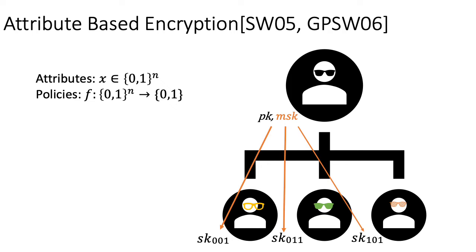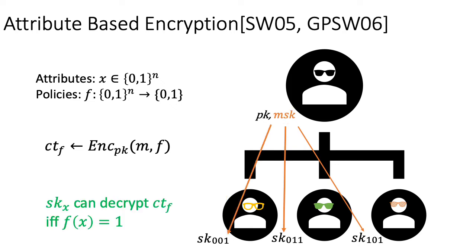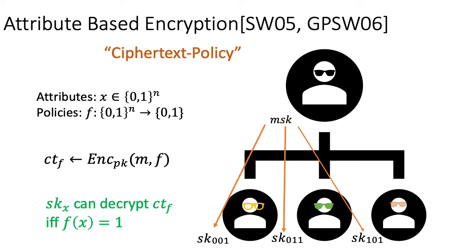To issue keys, we run setup to generate the public key and the master secret key. Using the master secret key, we can derive secret keys associated with different attributes. And to encrypt, we use the public key and encrypt with respect to a certain policy and the message we want to put into the ciphertext. The policy can be like: decryptors must be all graduate students — it expresses a boolean function of attributes. Only users with the secret key associated with attributes where this policy evaluates to 1 can decrypt the ciphertext; the rest cannot. This formulation is often called ciphertext-policy attribute-based encryption, since the policy is embedded into the ciphertext.